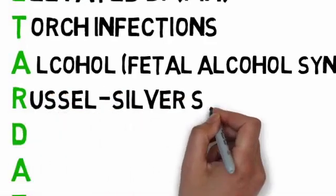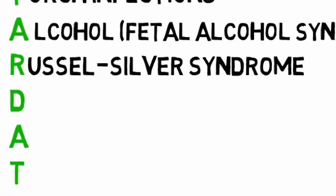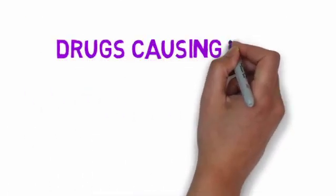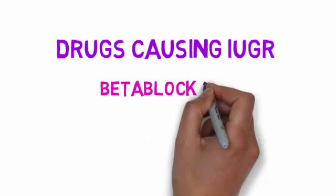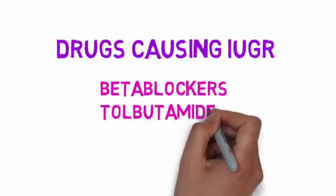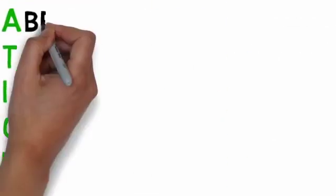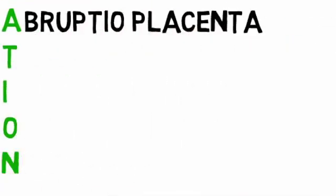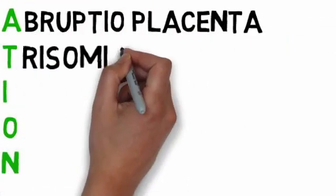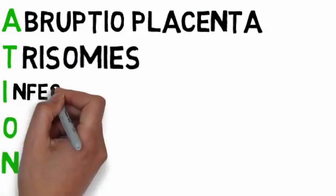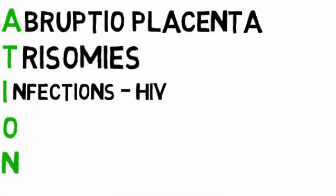Russell-Silver syndrome is also a cause. Drugs causing IUGR are beta blockers, tolbutamide, and ACE inhibitors. Other causes include abruptio placenta, trisomies, infections such as HIV, and oligohydramnios.